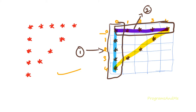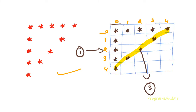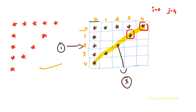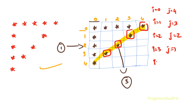Now let's move to the third part. We want a star at i=0 j=4, then i=1 j=3, i=2 j=2, i=3 j=1, and i=4 j=0. We need to write a condition to print stars along this diagonal. If we add i and j, we get: 0+4=4, 1+3=4, 2+2=4, 3+1=4, 4+0=4, so i+j always equals 4.